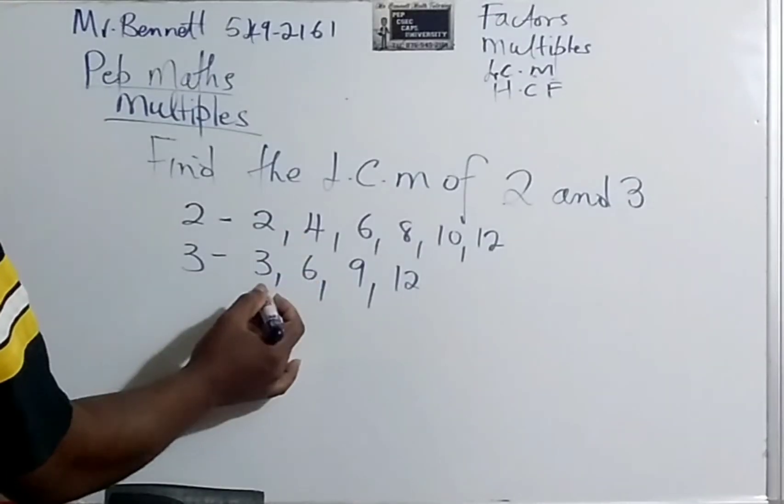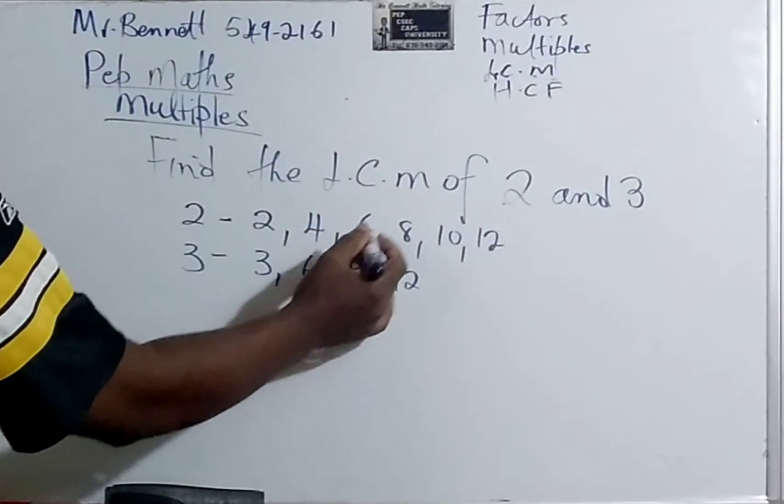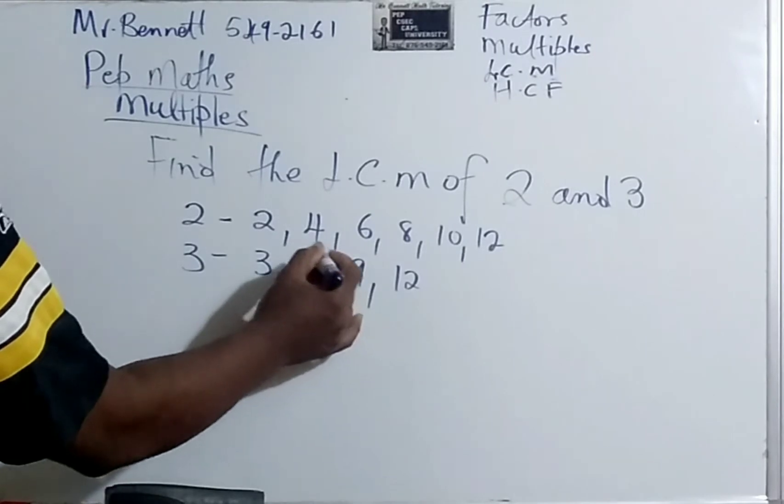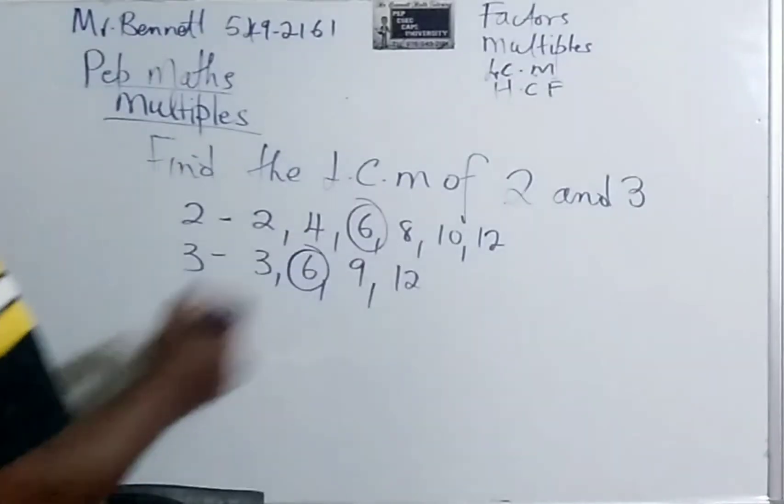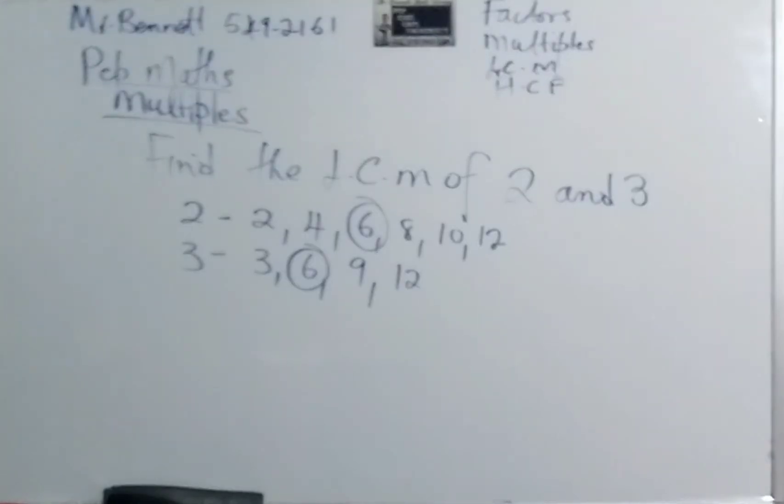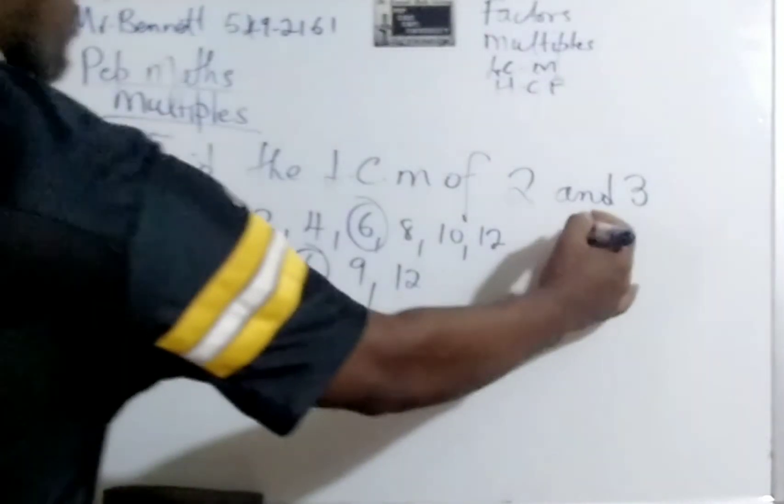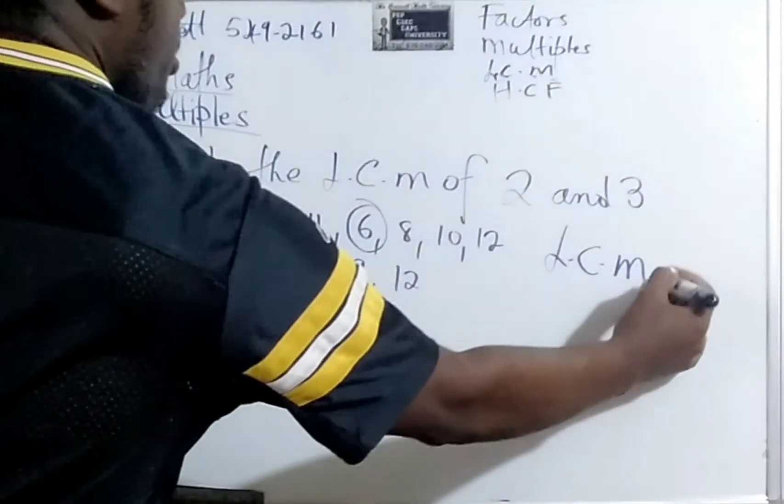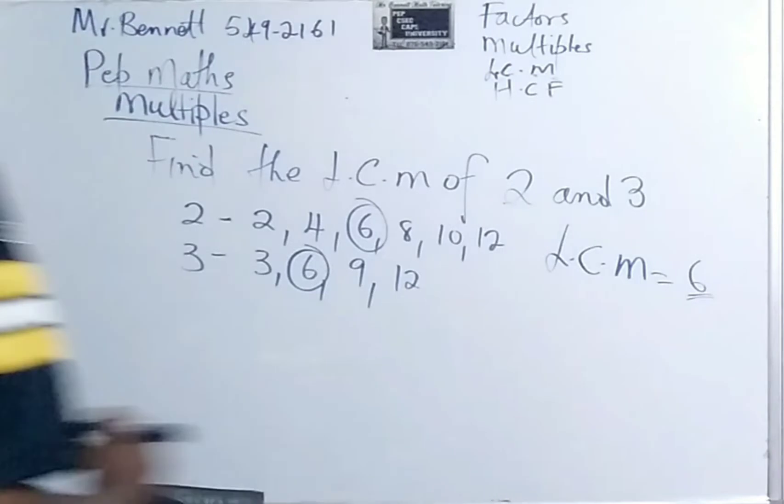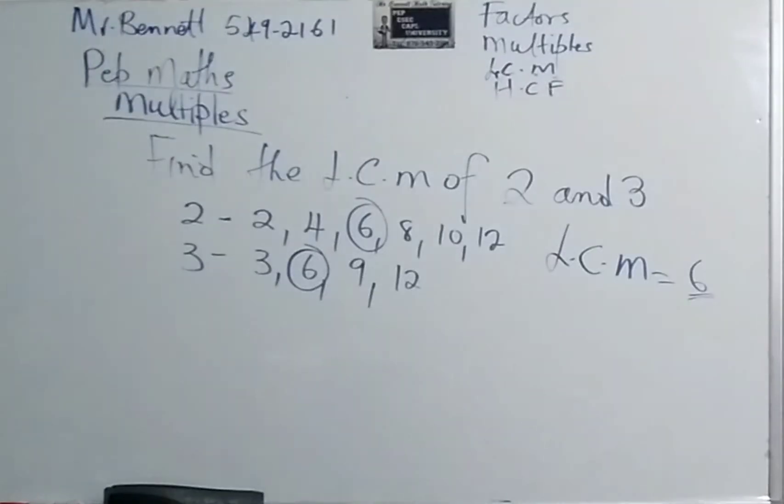Let us examine them. We have 2, now 2 is not here. 4, now 4 is not here. 6, there is a 6 here. So the lowest common multiple of 2 and 3 is 6. You know what, for your paper, that is equal to 6. And that would be your answer. And remember, this is very important when you are doing your fractions.